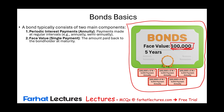Depending on the life of the bond — for example, this bond lasts for five years — since you lend them the money, they will pay you interest. So the bond consists of two things: the bond face value, and the coupon payments. These are the two components of a bond.